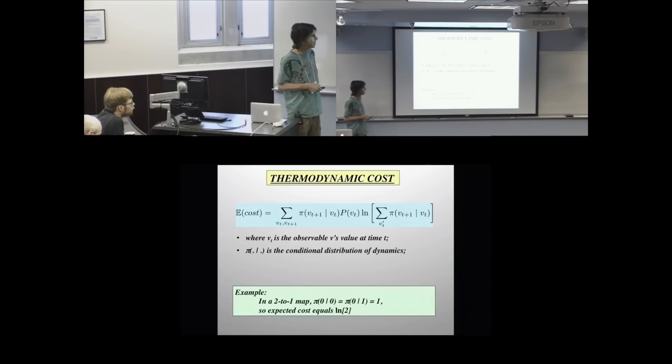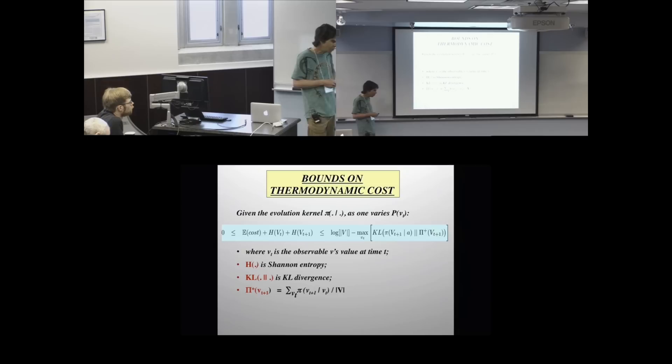So what this formula here is saying is that it's the mutual information between your information-bearing degrees of freedom and your ones you're not observing. You expect a cost if that mutual information grows with time, then you've got to be shunting some heat outside. This can actually be written in other very interesting ways in terms of Kullback-Leibler divergences and all kinds of stuff. There's a lot that could be said just about this funky formula right here. Here's an example, the promised example. Let's go back to a two-to-one map. Your evolution distribution from going from taking bits 0, 1 down to a 0, that means π of 0 given 0 and π of 0 given 1, both of those are equal to 1 because I'm doing a two-to-one map.